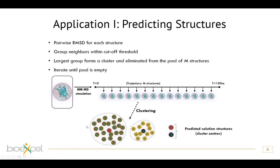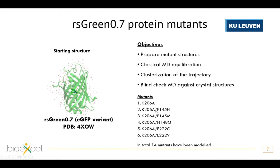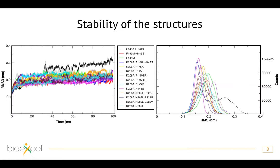We tested this on a set of mutants of the fluorescent protein called Teres Green, in collaboration with an experimental group. Starting from a crystal structure from the PDB, we performed simulations on 14 mutants for which we did not know the crystal structure. We then blindly compared our predictions against crystal structures measured afterward.